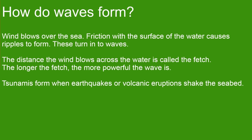Firstly, how do waves form? Waves form when wind blows over the sea. The friction with the surface of the water against the wind causes ripples to form, and these grow bigger and turn into waves. The distance the wind blows across the water is the fetch, and the longer the fetch the more powerful the wave because it has more force.